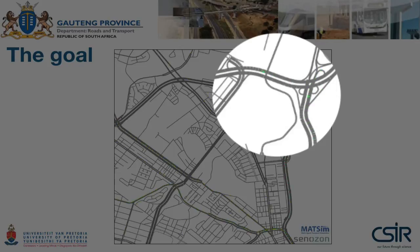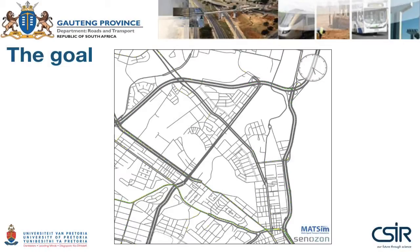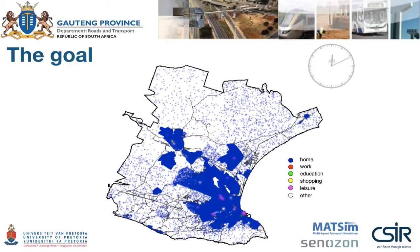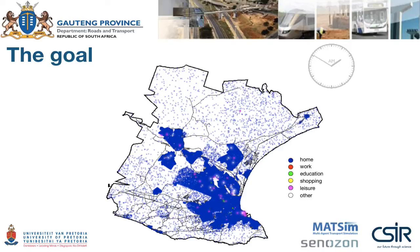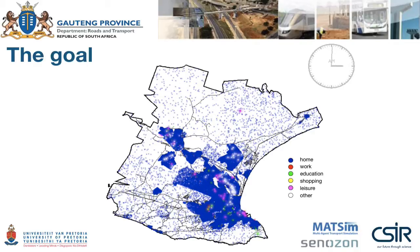You will be able to model a large area like we're showing here for the Nelson Mandela Bay metropolitan area. Each vehicle is modeled individually, representing an agent, and you can track each one of them because we model at such a disaggregate level. The simulation model is over a 24-hour planning horizon. Here you see a colored flash each time an agent starts an activity: a blue flash means someone arrived home, a red flash means someone arrived for work, green for education, yellow for shopping, pink for leisure, and white for other activities that also include commercial vehicle activities.